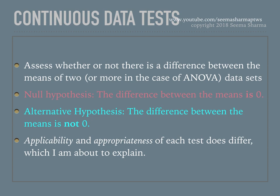The continuous data tests — one-way ANOVA, paired t-test, and independent t-test — all assess whether or not there is a difference between the means of two, or more in the case of ANOVA, data sets. The null hypothesis is that the difference between the means of the data sets is zero. The alternative hypothesis is that the difference between the means is not zero.